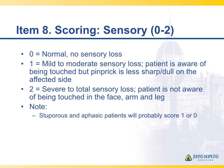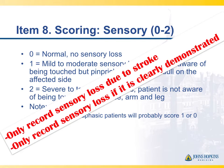Sensation is assessed using a pin or other sharp object over both sides of the face, arms, and legs. Only sensory loss due to stroke is recorded — not peripheral neuropathy, for example. A zero is normal, two is when they can't feel they're being touched at all, and one is somewhere in between.